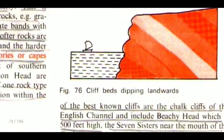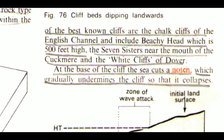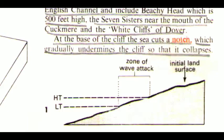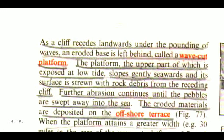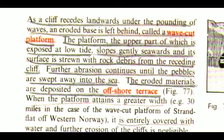Some of the best-known cliffs are the chalk cliffs of the English Channel and include Beachy Head which is 500 feet high, the Seven Sisters near the mouth of the Cuckmere, and the White Cliffs of Dover. At the base of the cliff, the sea cuts a notch, which gradually undermines the cliff so that it collapses. As a cliff recedes landwards under the pounding of waves, an eroded base is left behind, called a wave-cut platform.